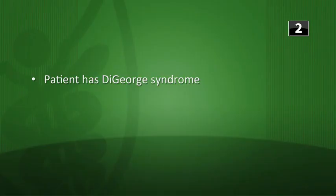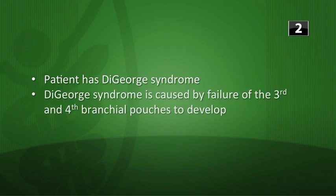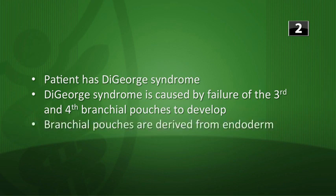This is a multi-step question. First, recognize this patient has DiGeorge syndrome. Then know that DiGeorge syndrome is caused by failure of the third and fourth pharyngeal pouches to develop — meaning no thymus and no parathyroids. Finally, remember that the pharyngeal pouches are derived from endoderm. So the answer is endoderm.